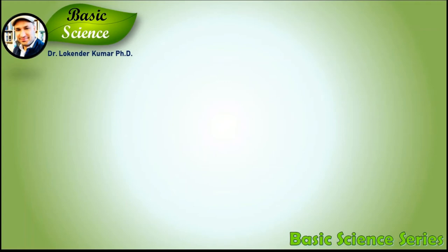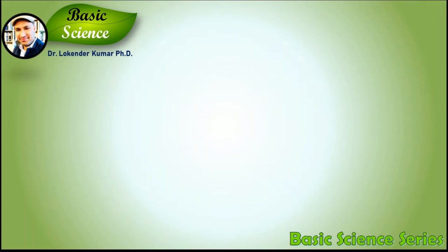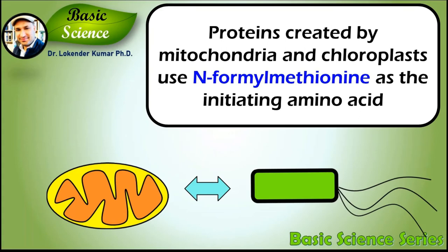Mitochondrial and plastid ribosomes are more similar to bacterial 70S ribosomes than to eukaryotic ribosomes. Proteins created by mitochondria and chloroplasts use N-formylmethionine as the initiating amino acid, as do proteins created by bacteria, but not proteins created by eukaryotic nuclear genes.